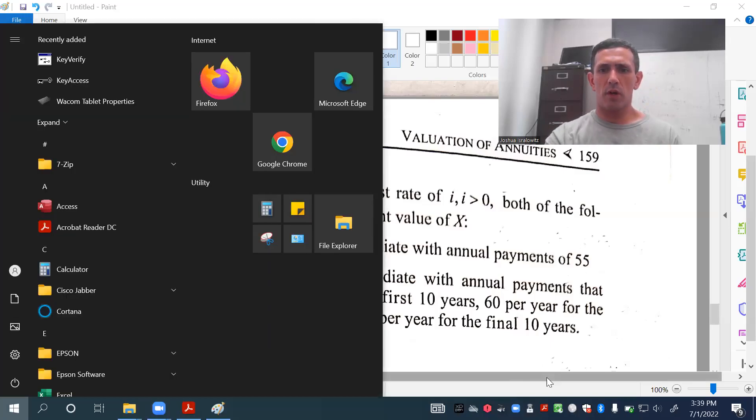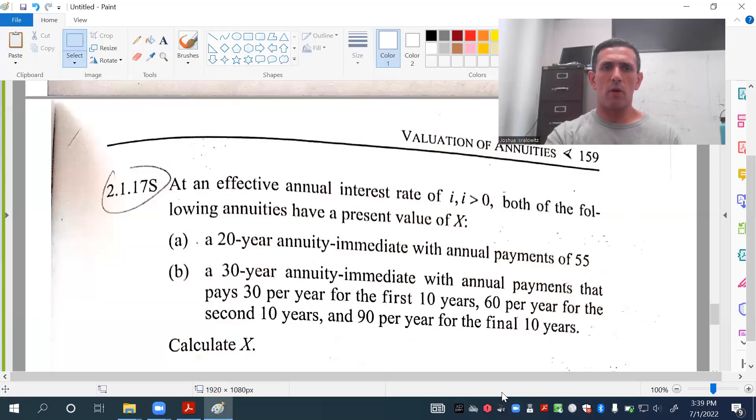Hello, everyone. What I want to do in this video is go over 2.17, since this is similar to one of the collected homeworks. At an effective annual interest rate of i, both of the following annuities have a present value of X. A 20-year annuity immediate with annual payments of $55, and a 30-year annuity immediate with annual payments that pays 30 for the first 10 years, 60 for the second 10 years, and 90 for the final 10 years. Calculate this common present value.